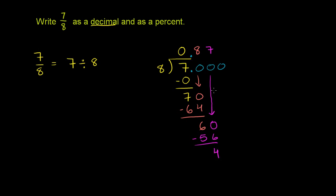So we still have a remainder. So let's keep bringing down some 0's. So let's bring this 0 down here. And 8 goes into 40 how many times? Well, 8 times 5 is 40, so it goes in nice and evenly. So it goes into it 5 times. 5 times 8 is 40. Subtract. No remainder.